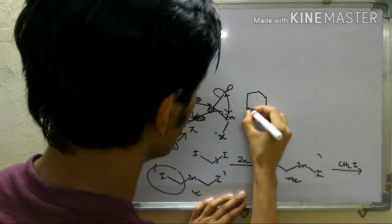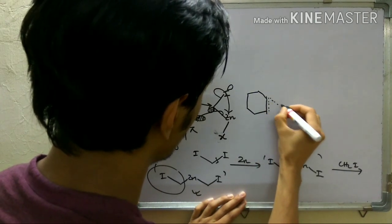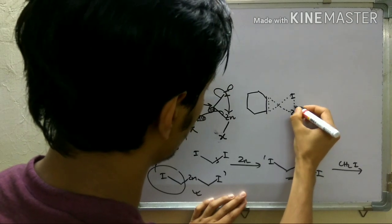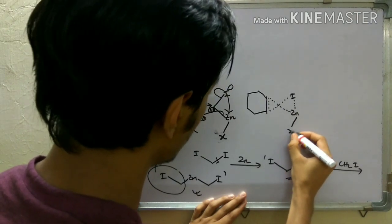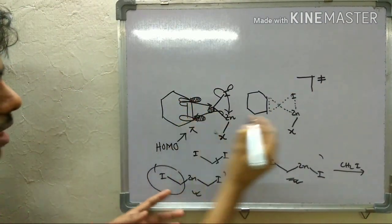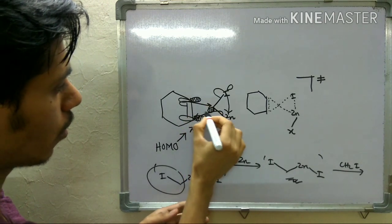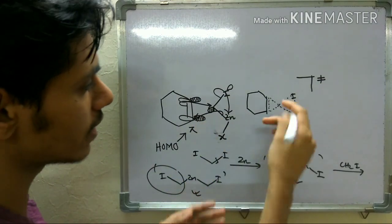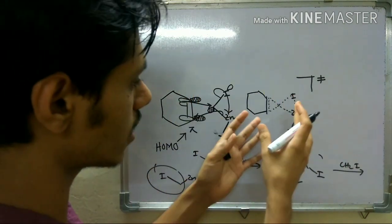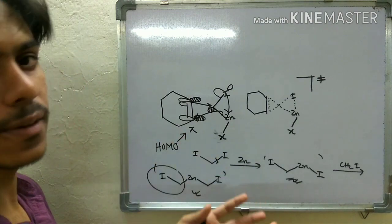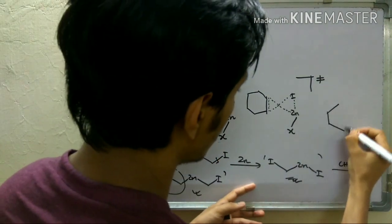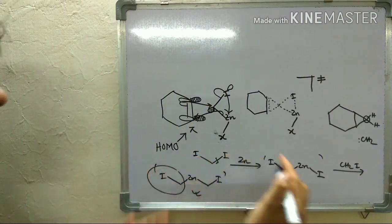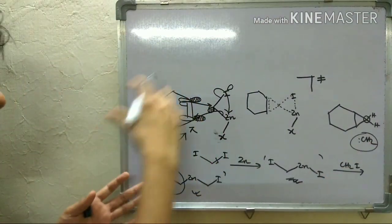You can draw the transition state showing which bonds are breaking and which are forming simultaneously. The breaking of the π bond, formation of two new σ bonds, breaking of the C–I σ bond — all events occur at the same time, making this a concerted reaction. A true free carbene is never generated in this reaction. However, a CH₂ unit is added at the end, which is a carbene equivalent. So a carbene equivalent is added, but a free carbene is never present in the reaction medium.